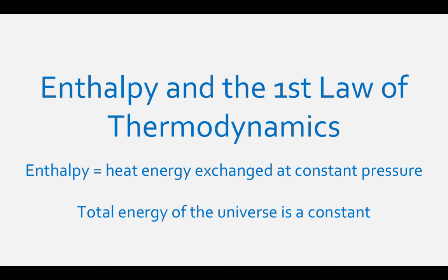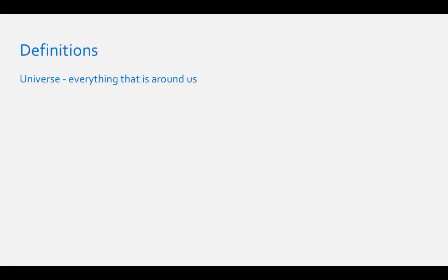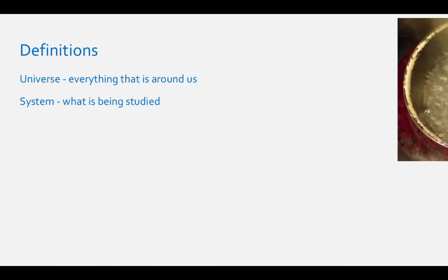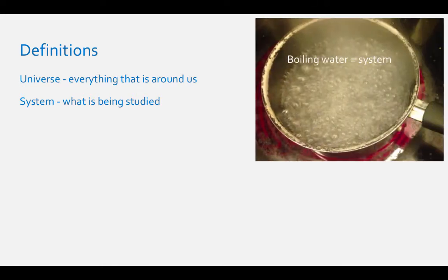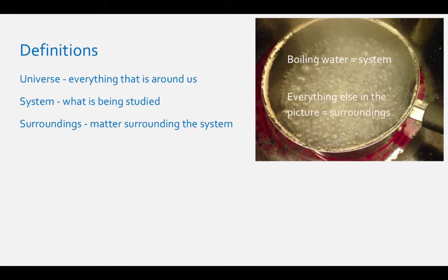First, let's define some terms we introduced already. What is the universe? It is everything we see around us, and that which we cannot see, but only imagine. Well, for the sake of this chemistry class, there are two parts to every universe. The system is what is being studied. If you are boiling water, the system is the water, and the surroundings are everything else around the system — the pot, the oven, and even you. We define the universe as the system plus the surroundings.